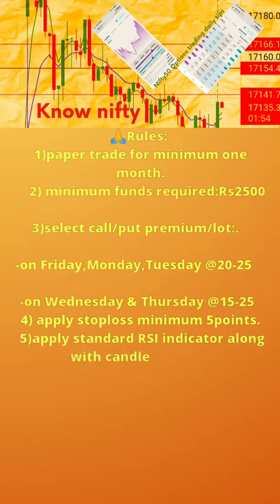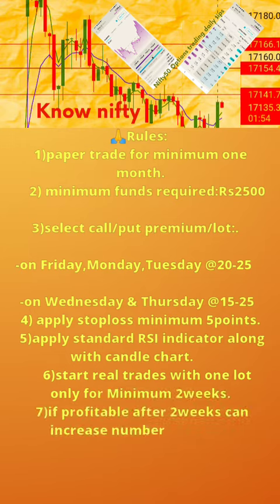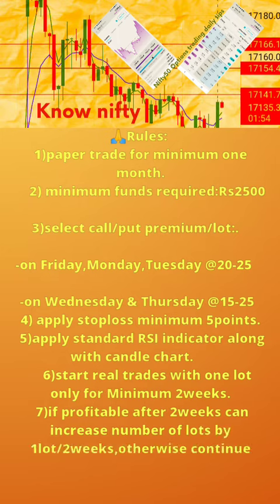5. Apply standard RSI indicator along with candle chart. 6. Start real trades with 1 lot only for minimum 2 weeks. 7. If profitable after 2 weeks, increase the number of lots by 1 lot for 2 weeks; otherwise continue with 1 lot for a further 2 weeks.